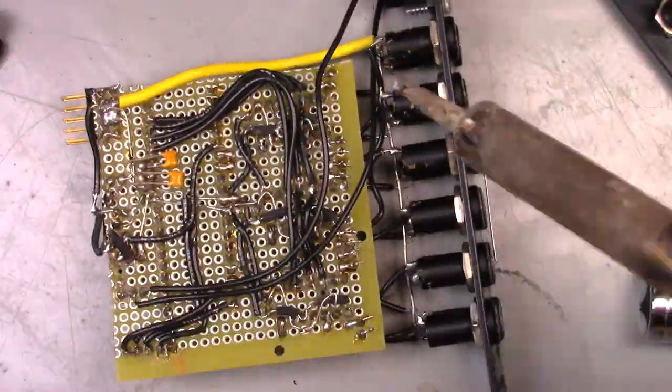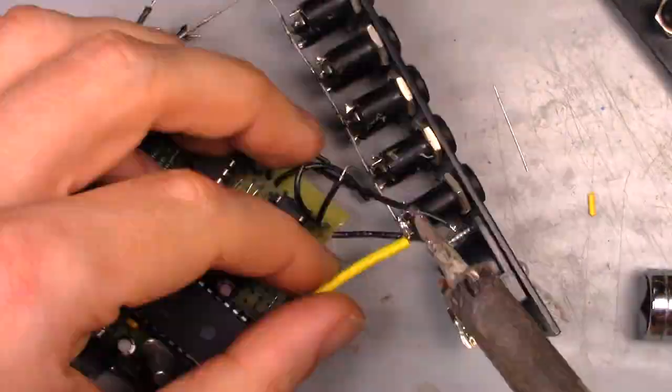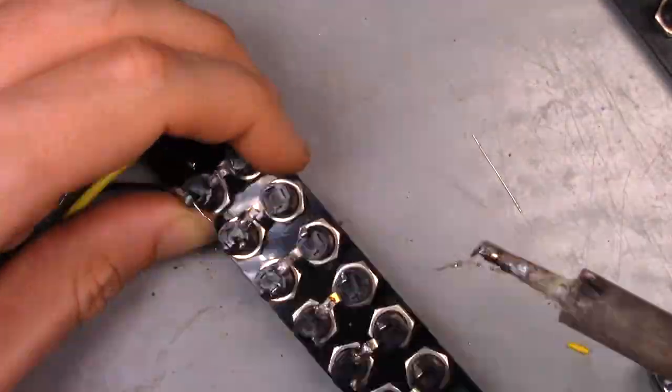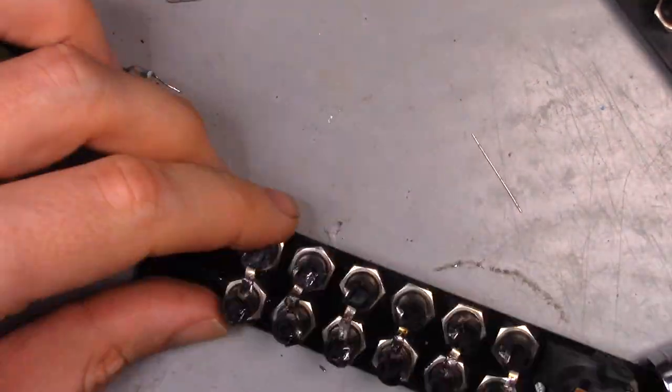So to start, I'm going to disassemble the MIDI modules I've previously built as I plan on using the circuit board I made and the jacks from the old module in the new version.